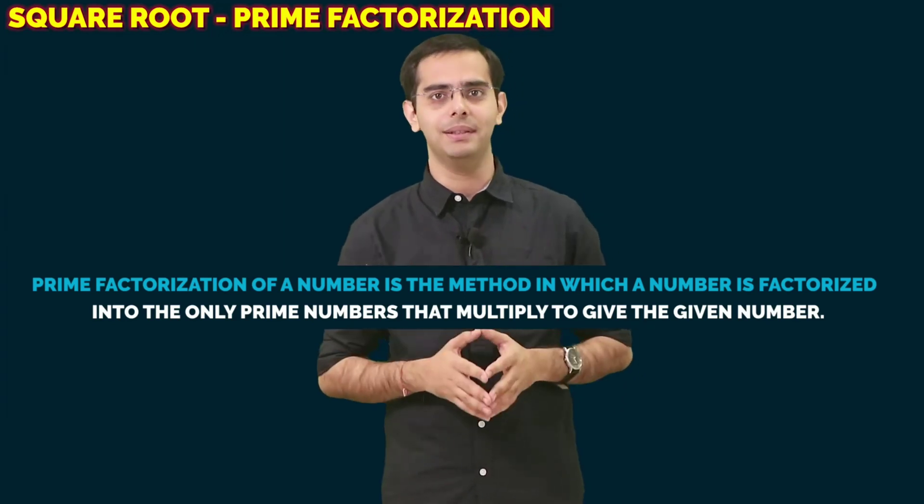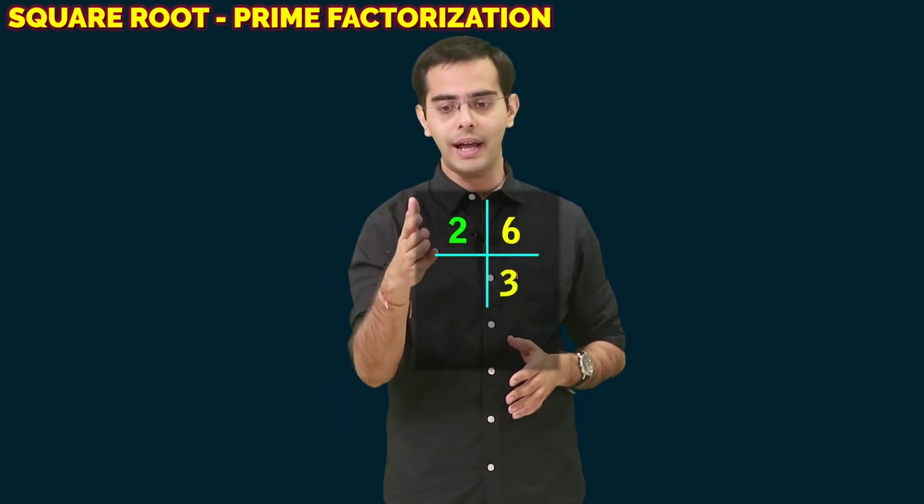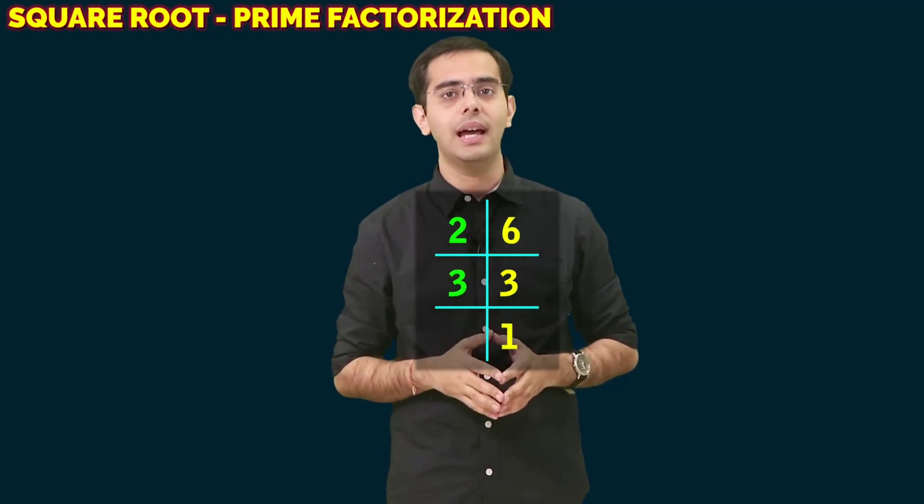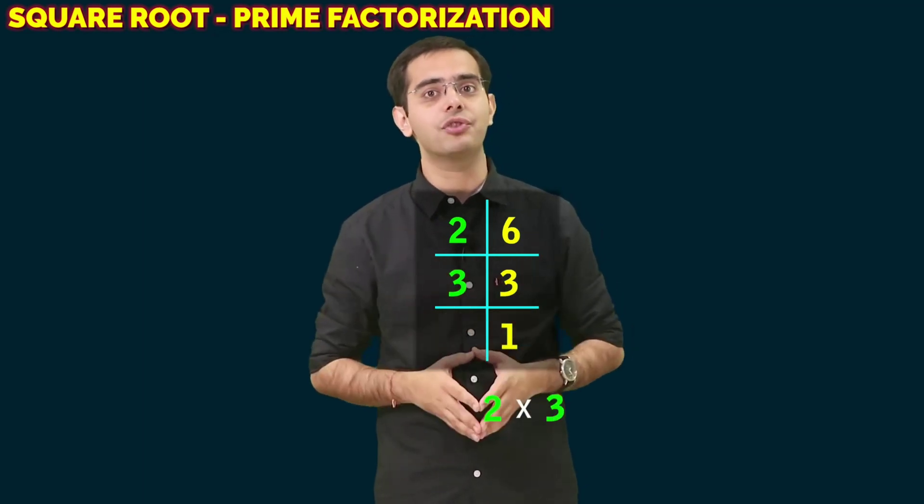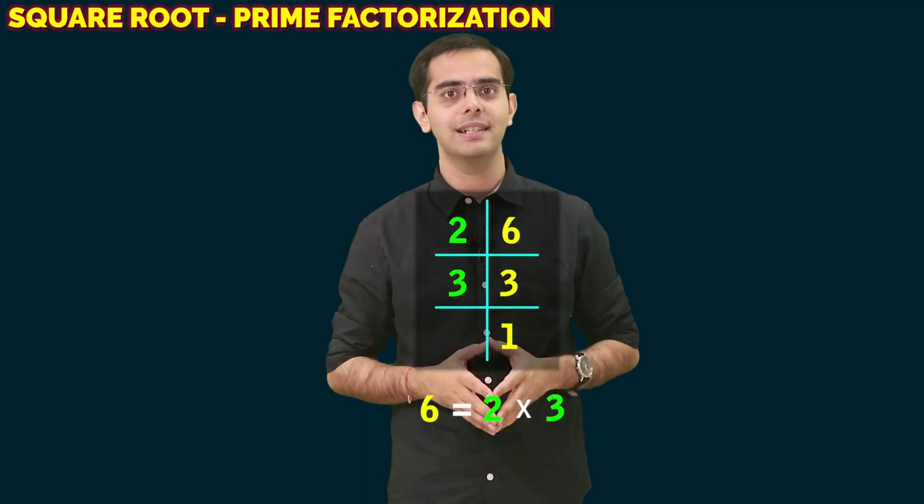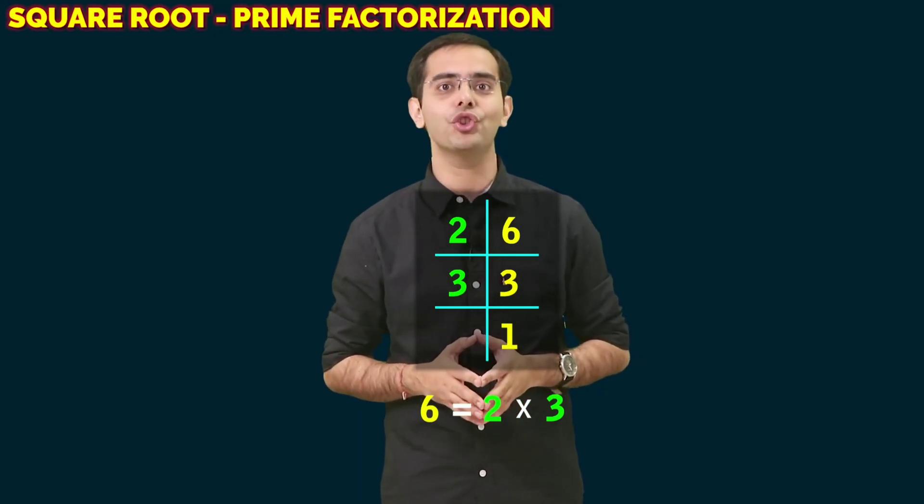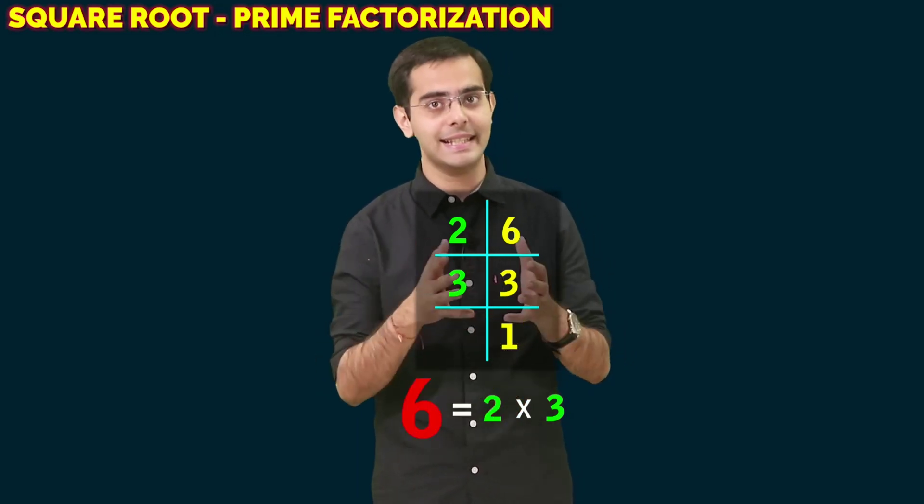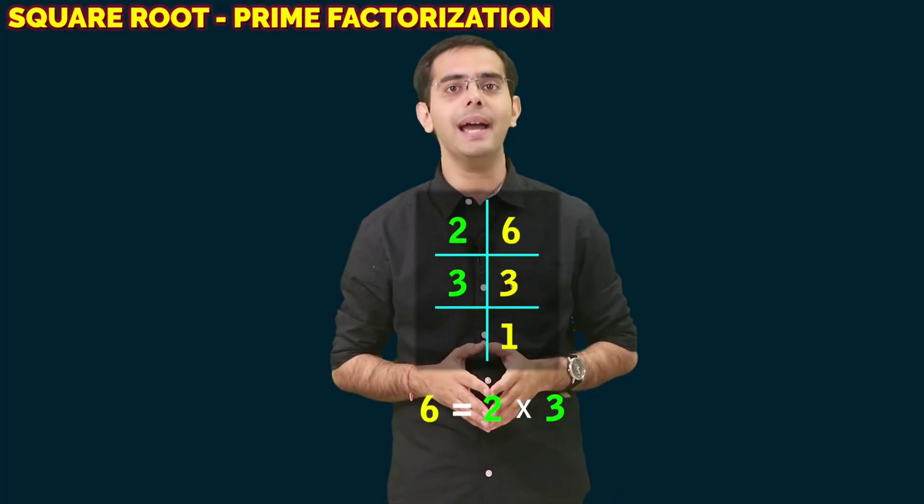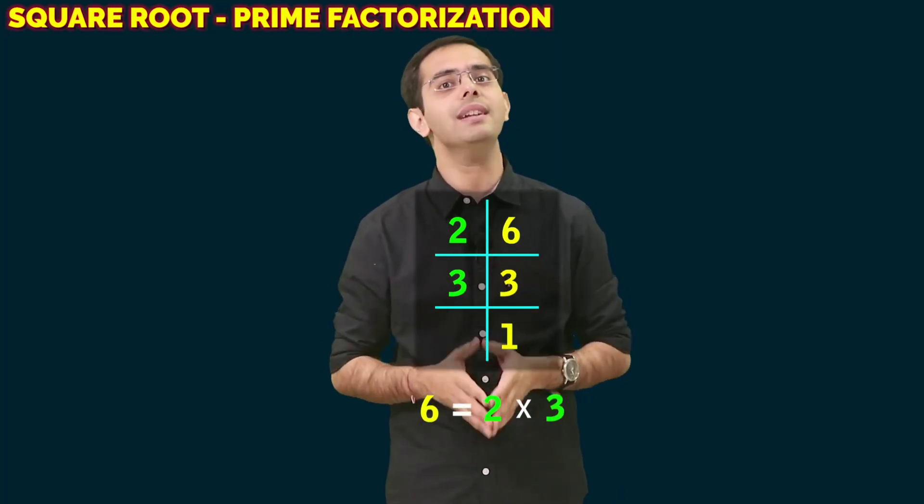Let's take an example. What are the prime factors of the number 6? They are 2 and 3, because 2 multiplied by 3 gives us 6. So the prime factorization of 6 is 6 = 2 × 3, where 2 and 3 are prime numbers.